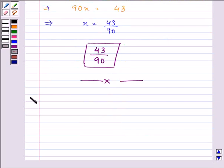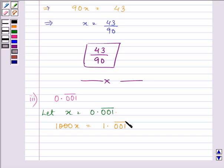Proceeding on further to the last and final part. Now in the third part we are given 0.001 bar. Now we have three numbers so let this be x. Right and now we need to multiply both the sides by 1000 so that we are able to move our decimal to this position. So now we have 1.001 bar.